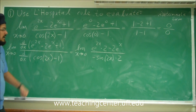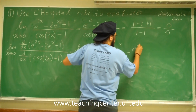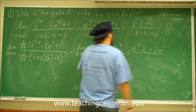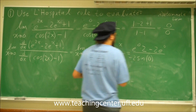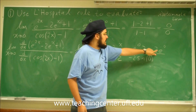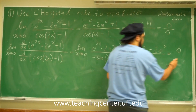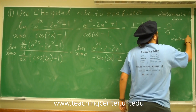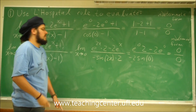Let's go ahead and plug in 0. We get e to the 0 times 2, minus 2e to the 0, divided by minus sine of 0 times 2. e to the 0 is 1, so 2 minus 2 is 0 on top, and sine of 0 is 0, so 2 times 0 is 0 on the bottom. So again, we get an indeterminate form, and since we get an indeterminate form, we have to apply L'Hôpital's rule again.